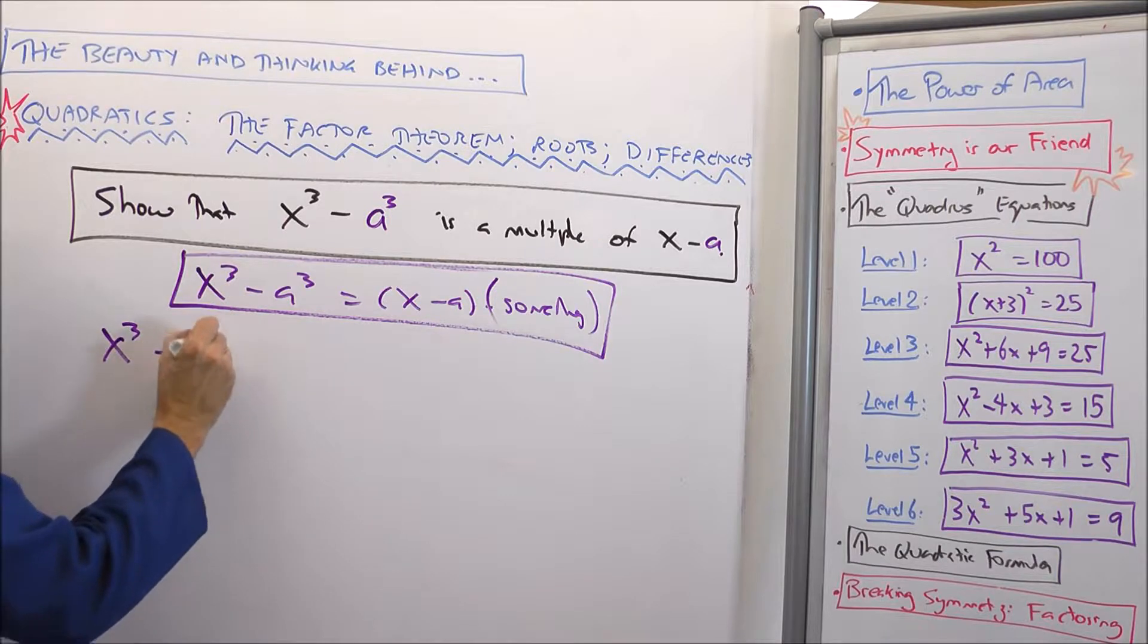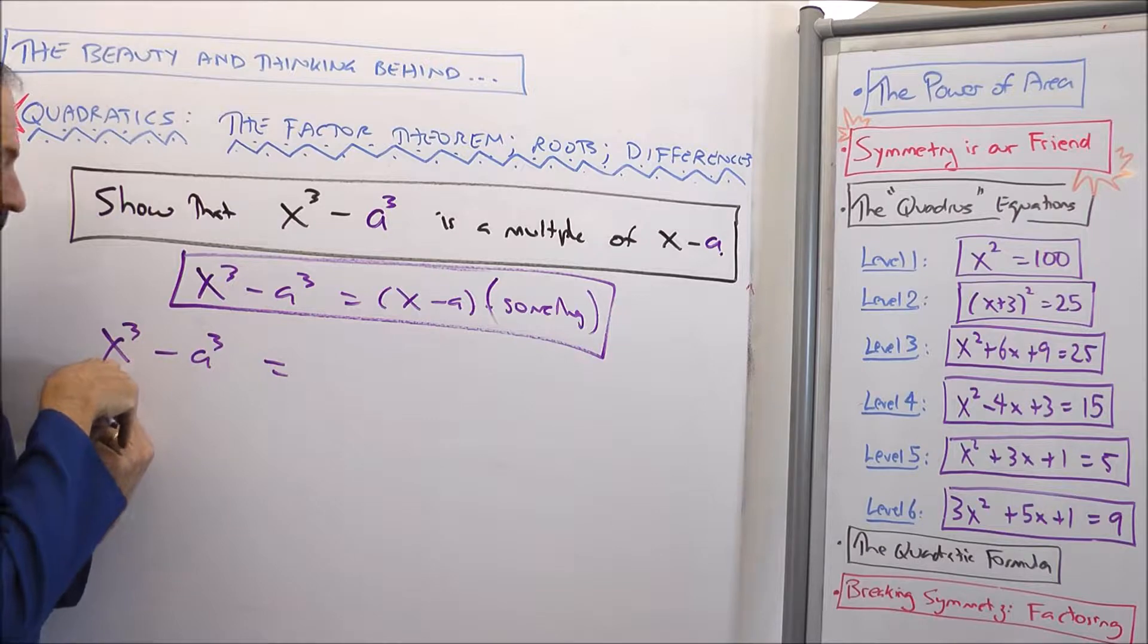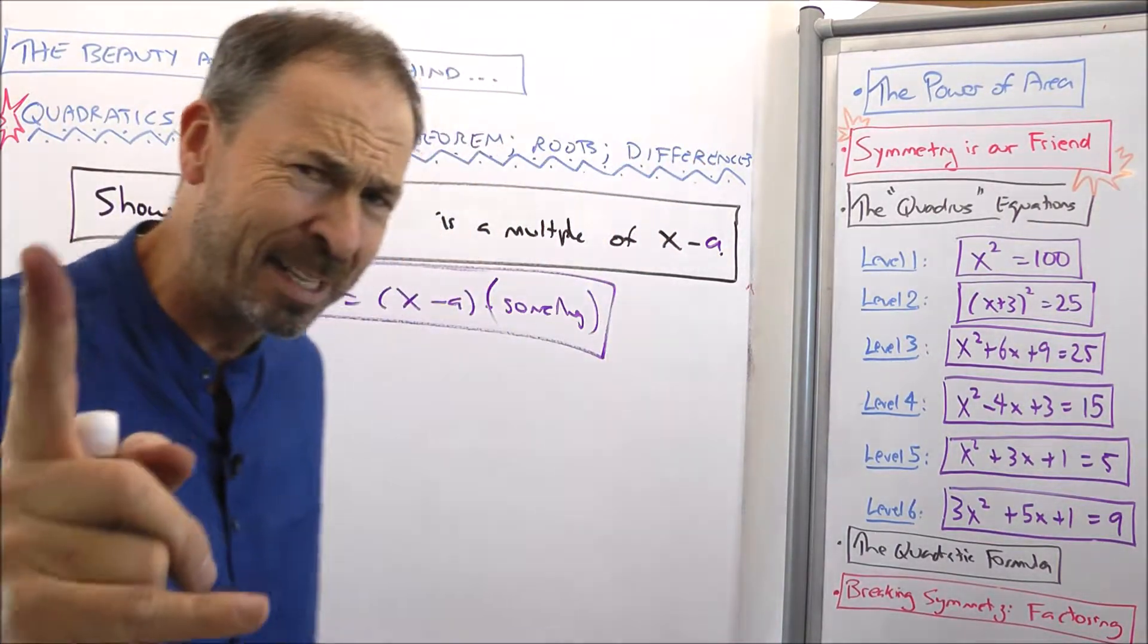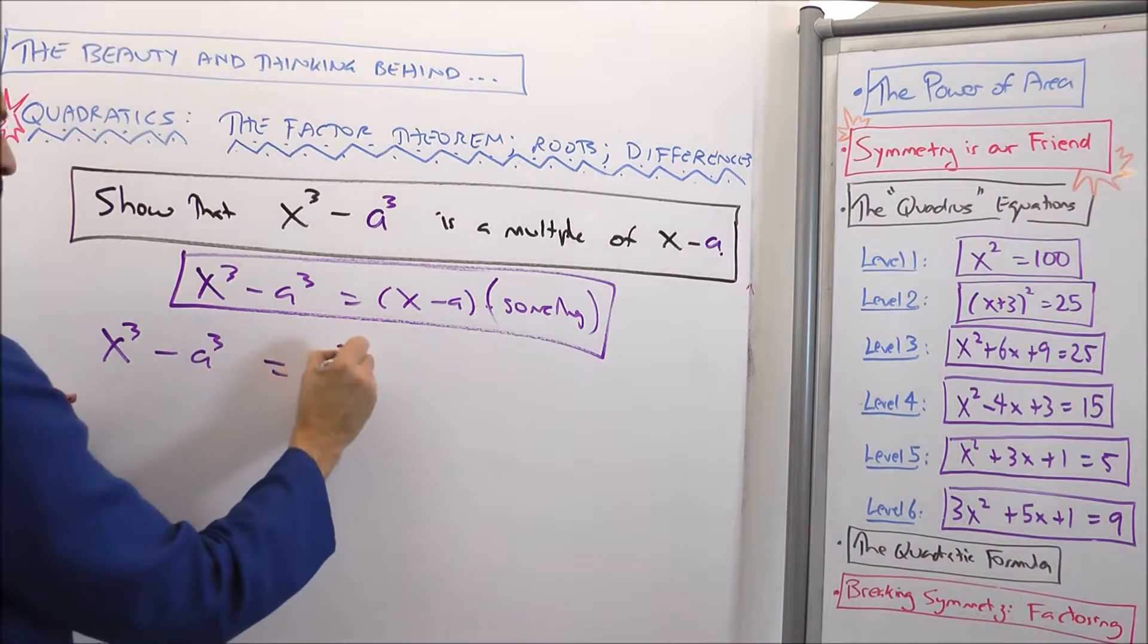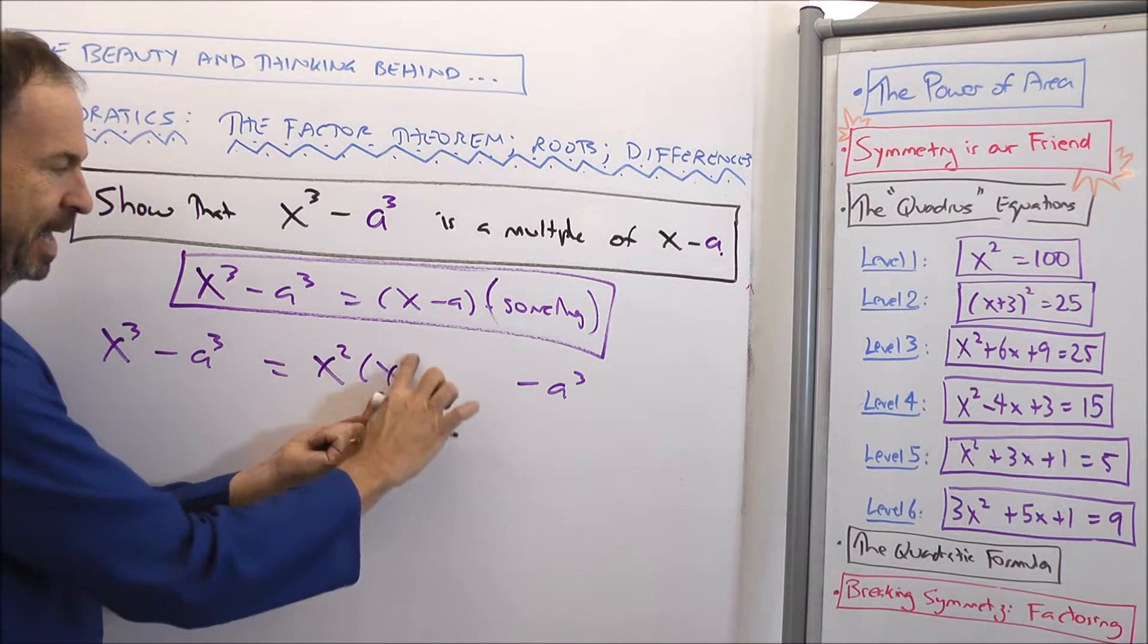In fact, we'll do exactly the same thing. x³ minus a³. I want this to be a multiple of x minus a, so I'll do each part in turn. This x³ part is at least a multiple of x. Not necessarily x minus a, but it's at least a multiple of x. It's actually x² times x, and there's still a minus a³.